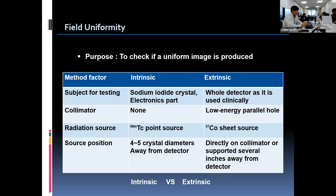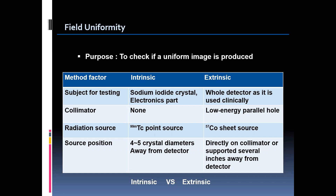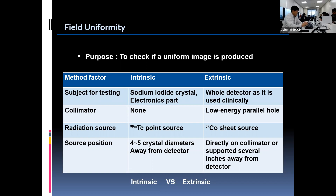This table is the comparison between intrinsic and extrinsic methods. Intrinsic testing is done without a collimator to check the condition of the sodium iodide crystal and electronic parts such as PM tubes. On the other hand, extrinsic is done with the collimator in place to assess the equipment as it is used clinically. We can choose one method or perform intrinsic testing weekly while doing extrinsic daily. Once a specific method is adopted, the same method should be used consistently for day-to-day comparison.